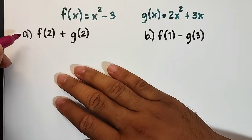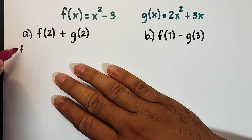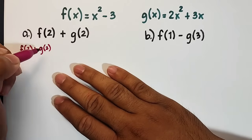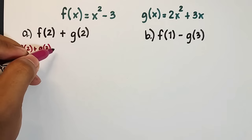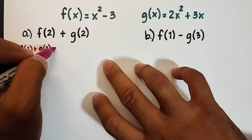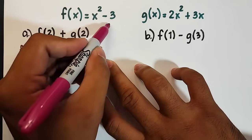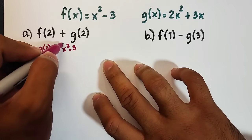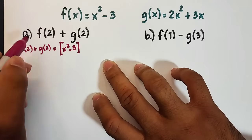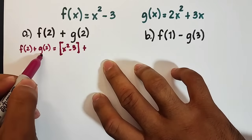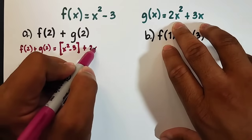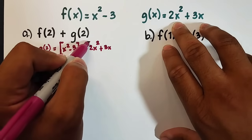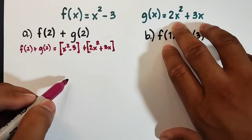For letter A, we are given f(2) + g(2). So we will copy f(2) + g(2). Listen carefully. Since this one is f(2), we will copy x² - 3. Let's enclose it using a bracket, and then plus your g(2), which is 2x² + 3x.